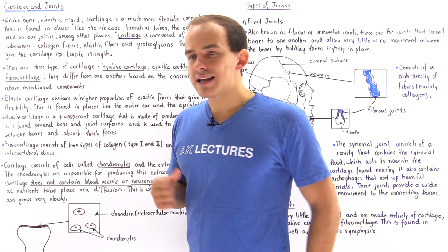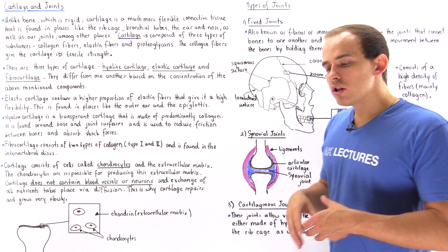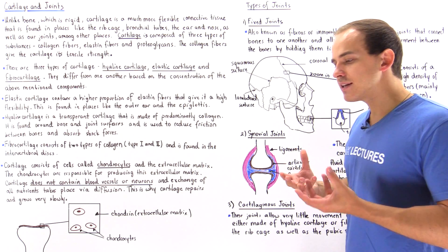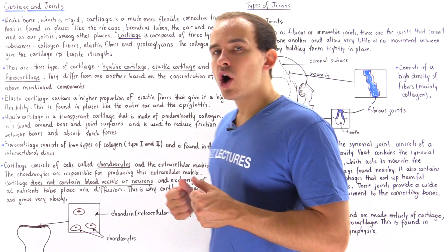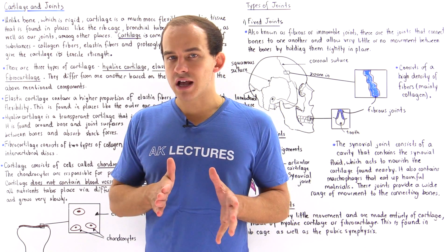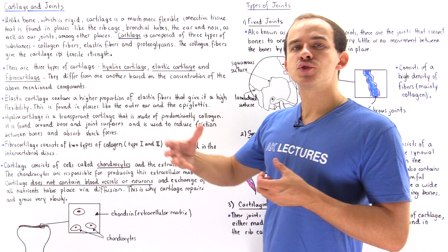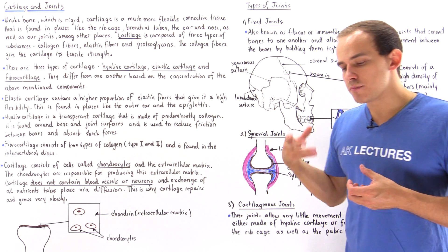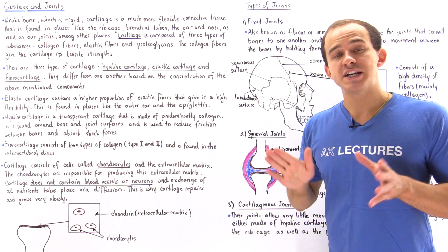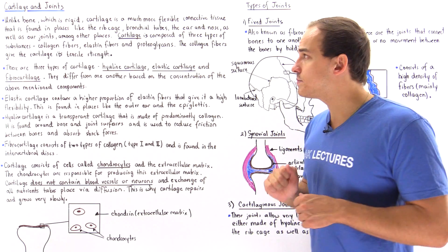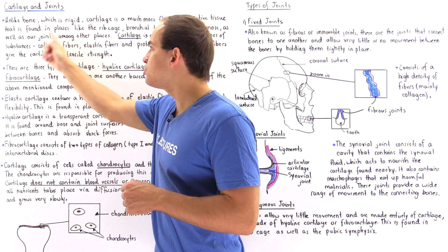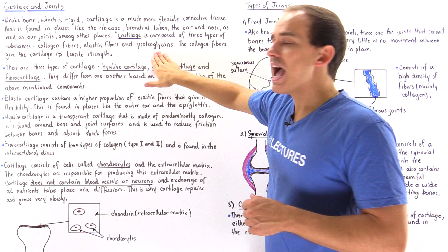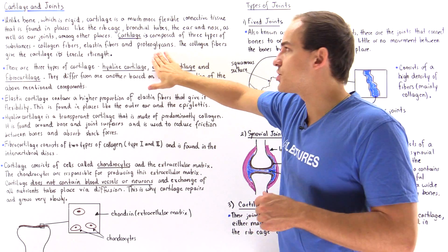So what exactly is cartilage? Cartilage is a type of connective tissue that consists of cells known as chondrocytes, as well as the extracellular matrix. The extracellular matrix of cartilage is made up of three types of substances: collagen fibers, elastin fibers, and proteoglycans.